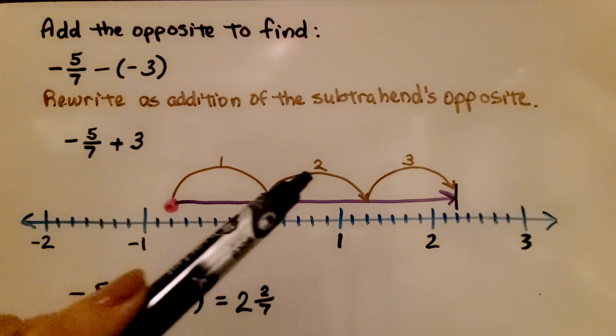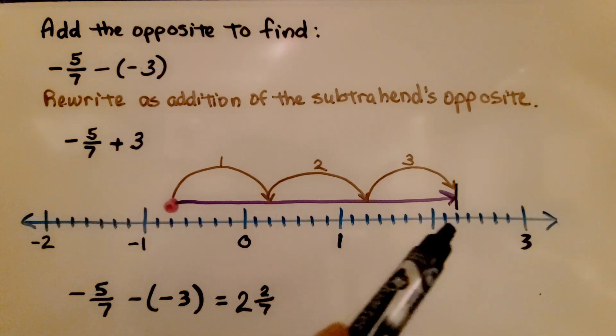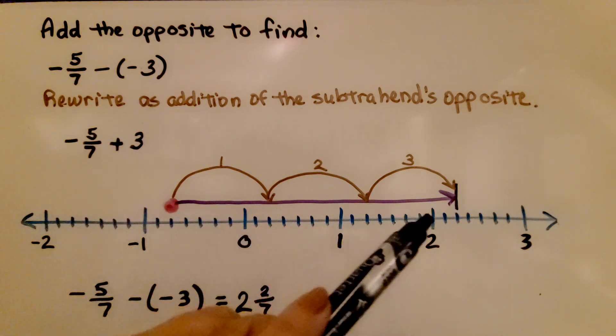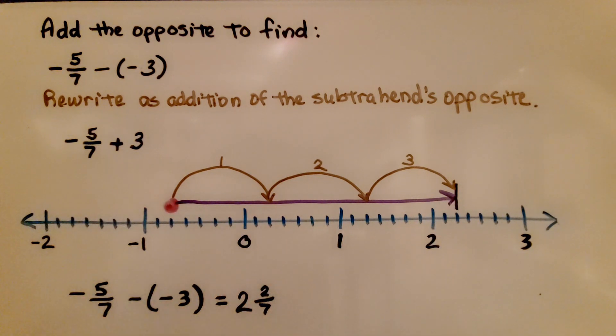We're going to add 3. So we're going to go 1, 2, 3. We draw our arrow to 2 and 2 sevenths. We know that negative 5 sevenths minus negative 3 is equal to a positive 2 and 2 sevenths.